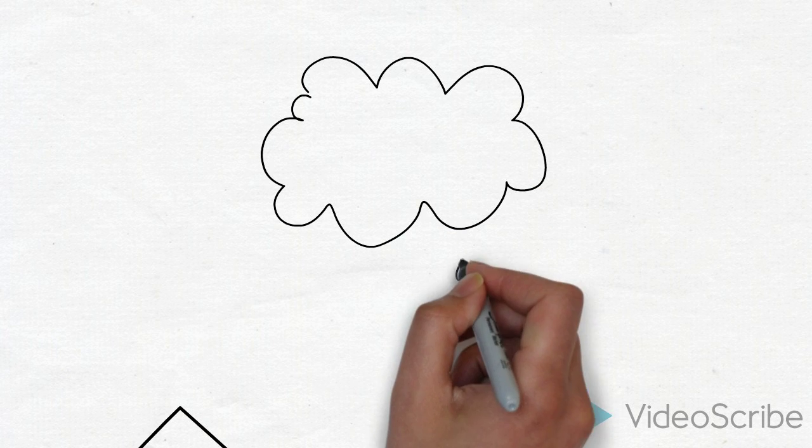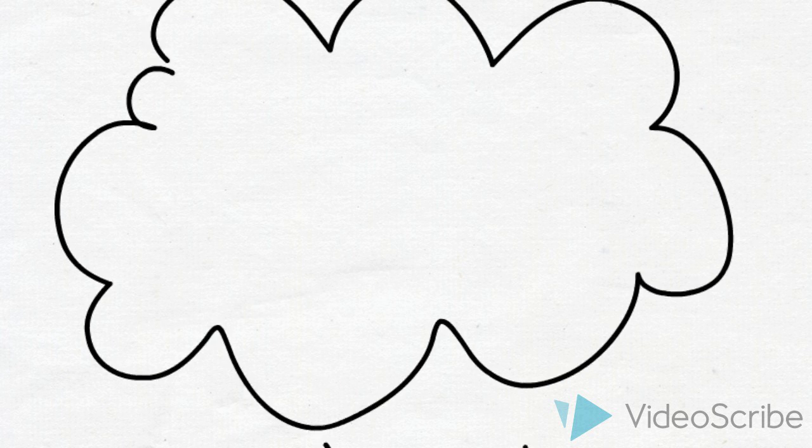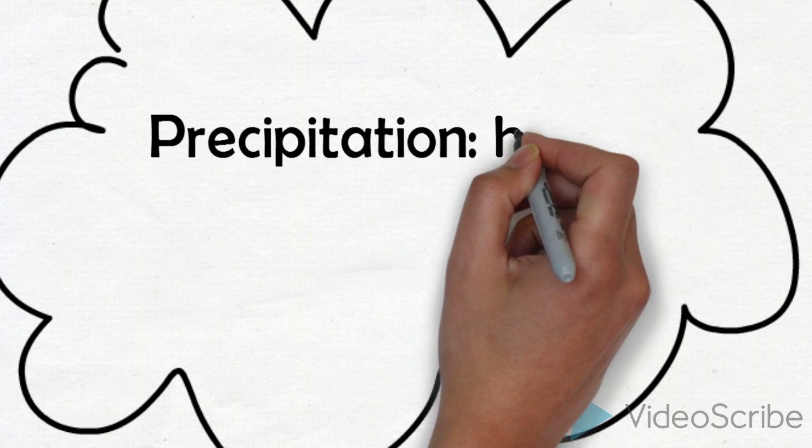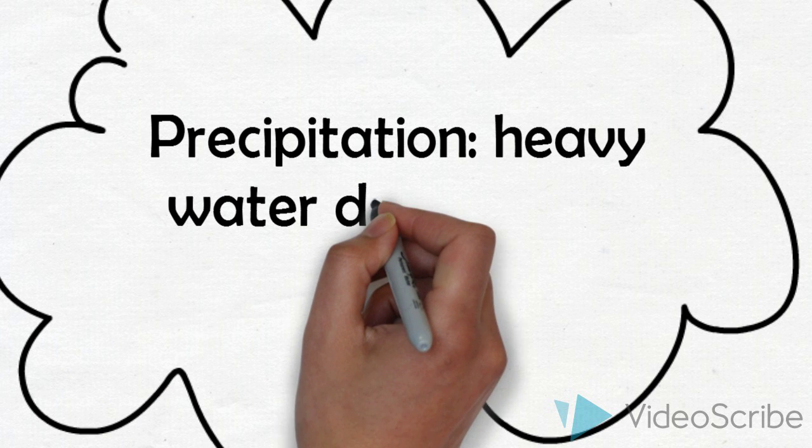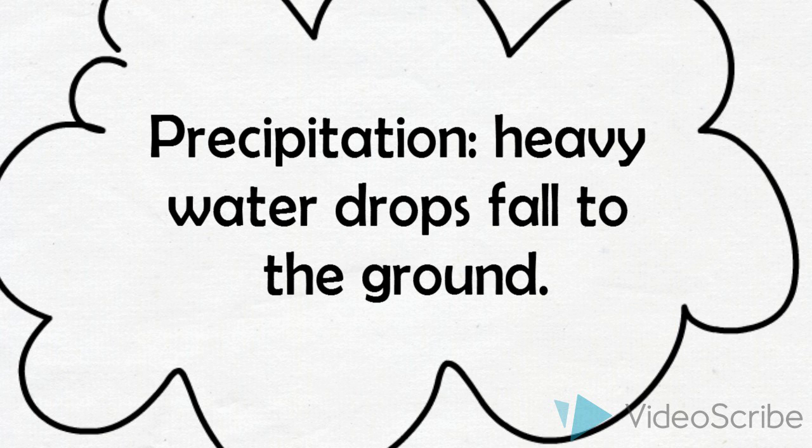And the water droplets turn into bigger water drops which fall down to the earth. This is called precipitation. Evaporation, condensation, and precipitation make up the water cycle.